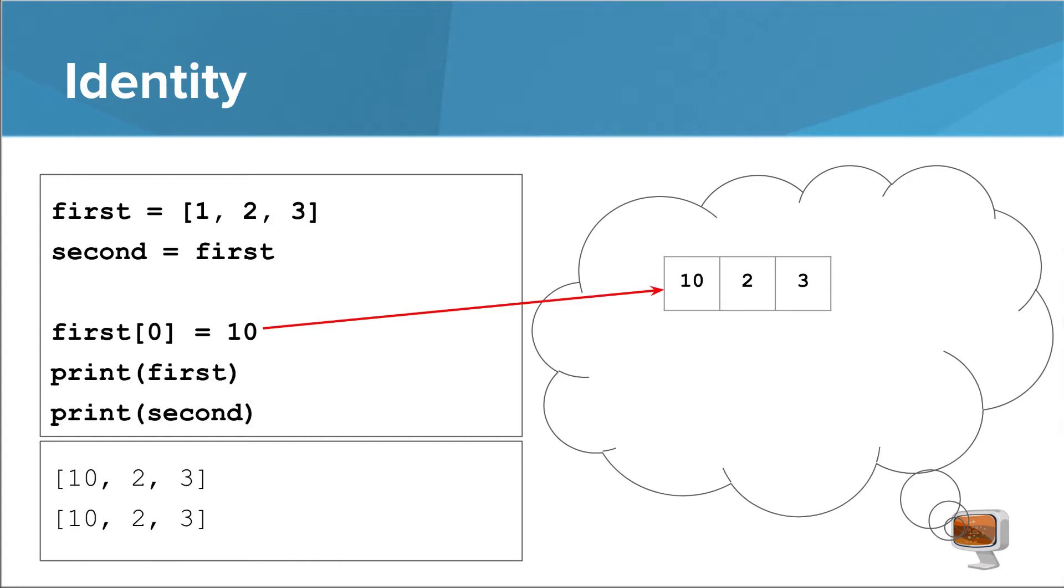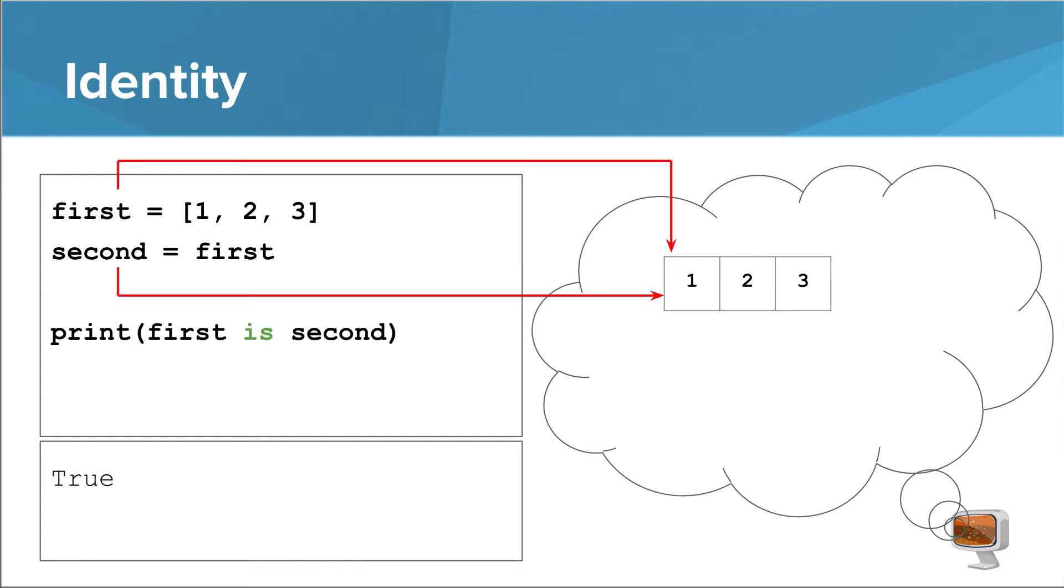However, if you change one of the variables, that change will be reflected in the other one. In addition to being equivalent, first and second are identical. So how do we tell if two things are identical, besides trying to mess one thing up and seeing if the other one gets messed up too? Python has a handy keyword for this exact purpose, the IS keyword.